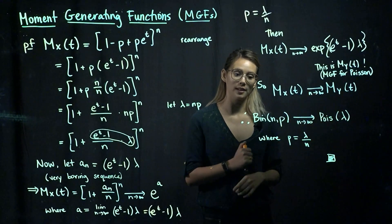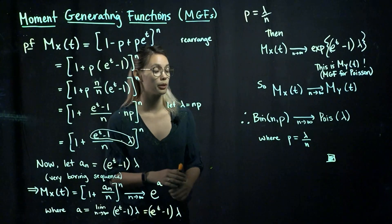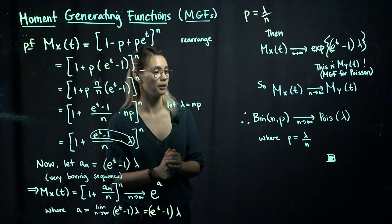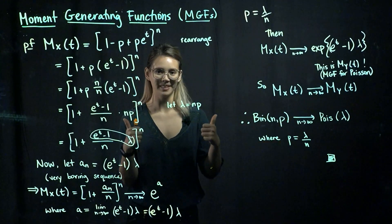So what this is saying is that our binomial random variable with parameters n and p will converge to a Poisson random variable with parameter lambda, where p is equal to lambda over n.